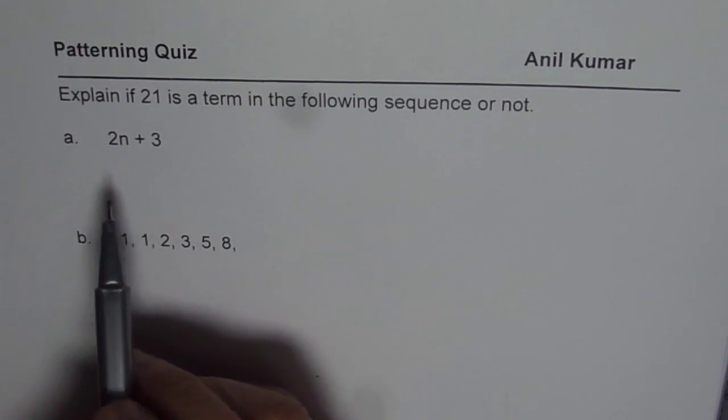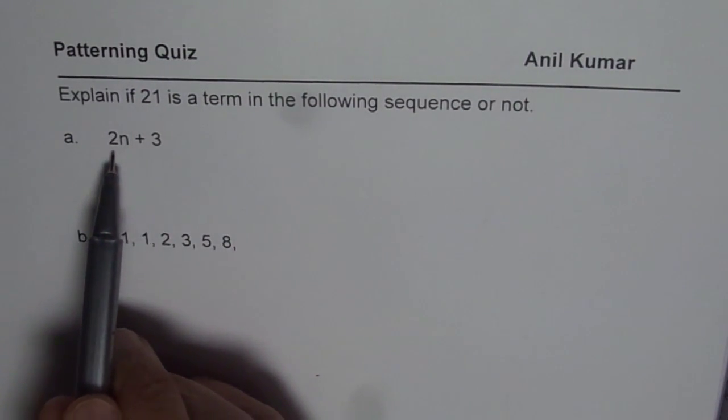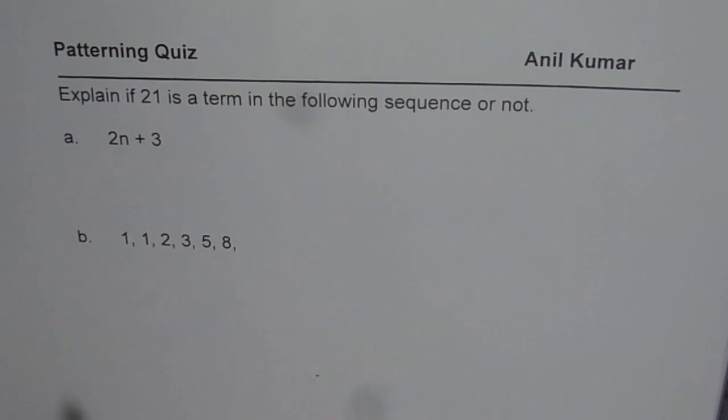So we need to figure out whether 21 belongs to this sequence which is represented by the algebraic expression 2n plus 3. And also we need to check this pattern which is 1, 1, 2, 3, 5, 8. So this sequence is kind of growing. You need to figure out whether in the sequence you will get the number 21 or not. I hope the question is clear to you. You can pause the video, answer, and then look into my suggestion.